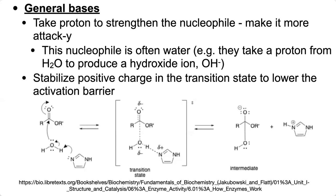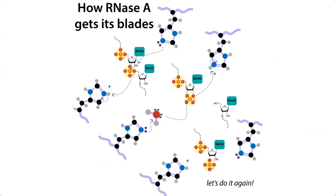With our general bases, once an amino acid acts as a general base and gets a proton, it can now act as a general acid. In order to actually get reset, we need it to act as a general acid — give up that proton and become reset. We'll look at a ping-pong mechanism that's commonly used, often seen with histidines, where we can go back and forth between the acid and the base form.